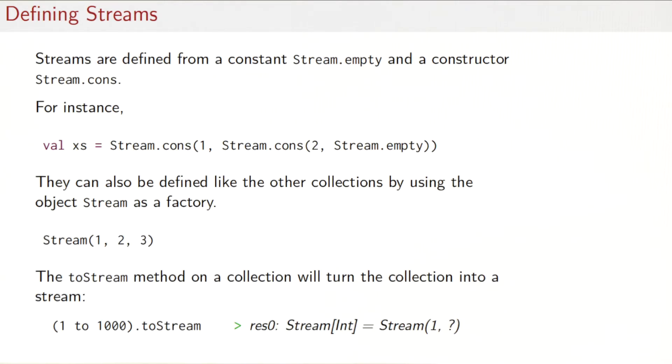So here's how you can define streams. They can be built from a constant stream.empty, so the empty value in the stream object and a constructor stream.cons. So to build a stream that consists of the number one and two, you could write stream cons one stream cons two stream empty. And of course, streams can also be defined like the other collections by using the stream object as a factory. So you could write simply stream of one, two, three.